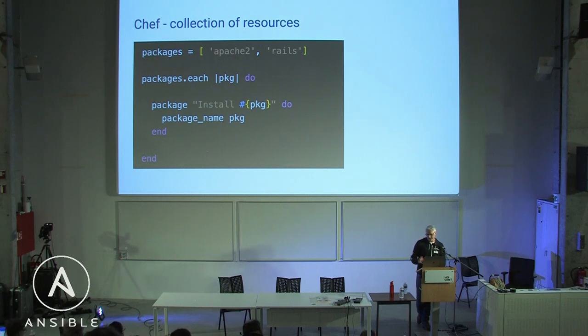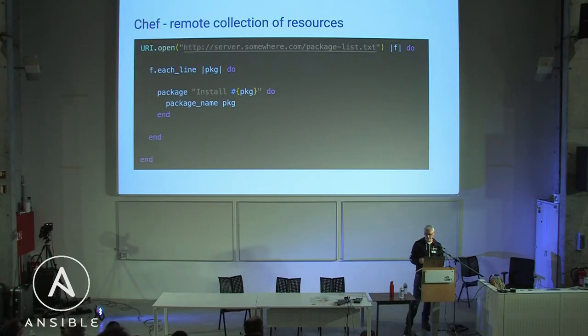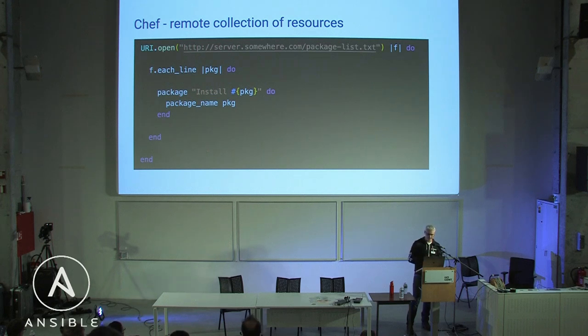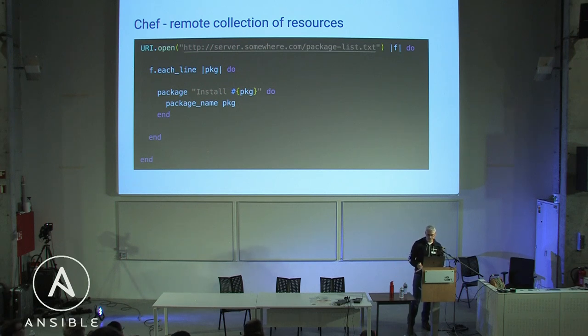In that example the list of packages is hard-coded, but going a step further — and this is where the real power of mixing imperative programming languages with declarative tooling comes in — you can fetch a file of approved packages from an internal server. That list might come from your auditing or security department who review and publish it. When you run, you download that file and for each package listed on separate lines you do the same construct. That's why I liked Ruby: I could mix in anything available and wasn't limited to what the Chef team already built.